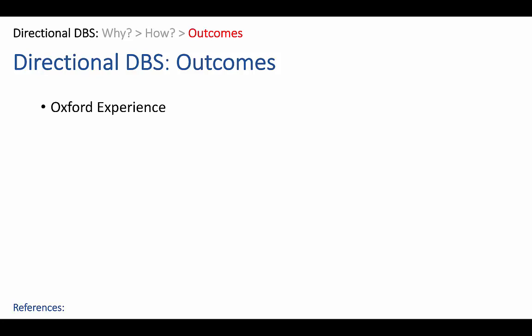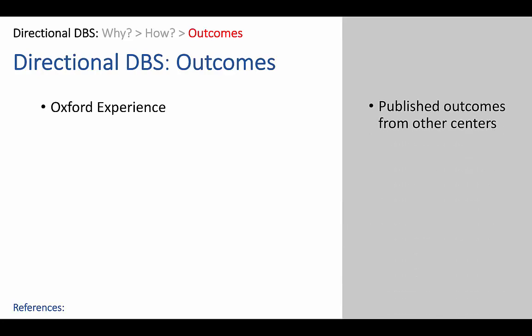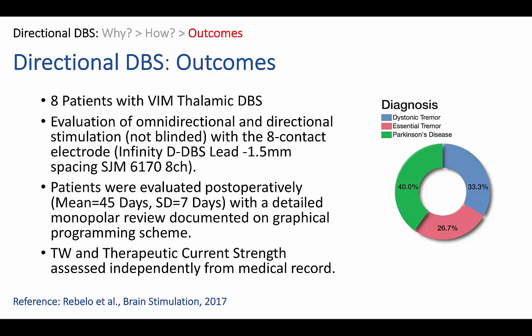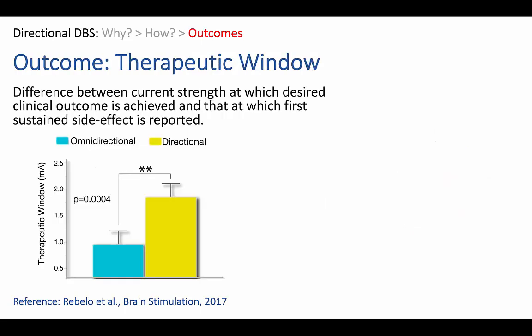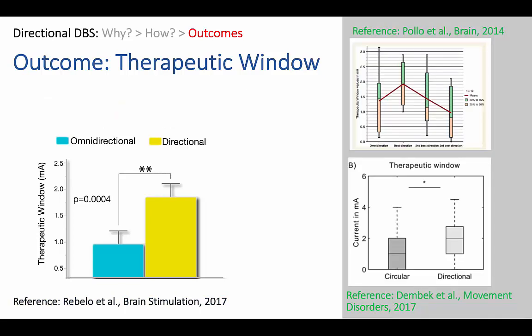Finally, now that we've covered why and how, we'll look at some early outcomes. I'm going to report my own experience when I was the academic neurologist at Oxford, but also cover the published outcomes from other centres. We've reported on eight patients with VIM thalamic DBS with the Infinity DBS lead system, which has 1.5 millimeter spacing. We evaluated patients at 45 days post-operatively with a detailed monopolar review and graphical programming scheme. Our key finding was a gain in therapeutic window, defined as the difference between current strength at which desired clinical outcome is achieved and that at which the first sustained side effect — no matter how minor — is reported. Directional DBS in our study produced a significant improvement in therapeutic window.